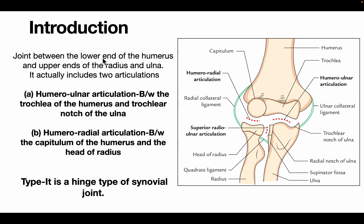Introduction: the elbow joint is a joint between the lower end of the humerus and the upper end of the radius and ulna. It includes two articulations: the humeroulnar articulation, between the trochlea of the humerus and the trochlear notch of the ulna, and the humeroradial articulation, between the capitulum of the humerus and the head of the radius.